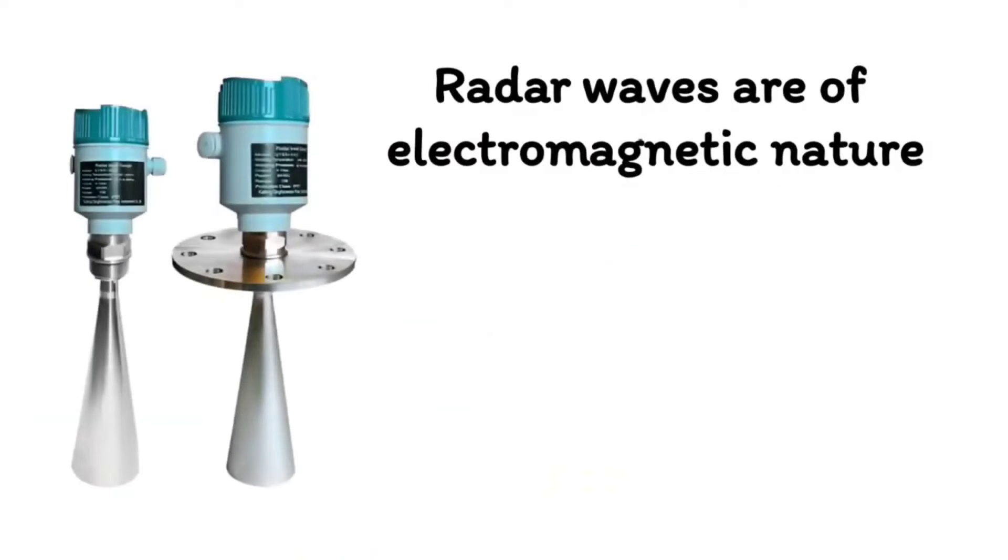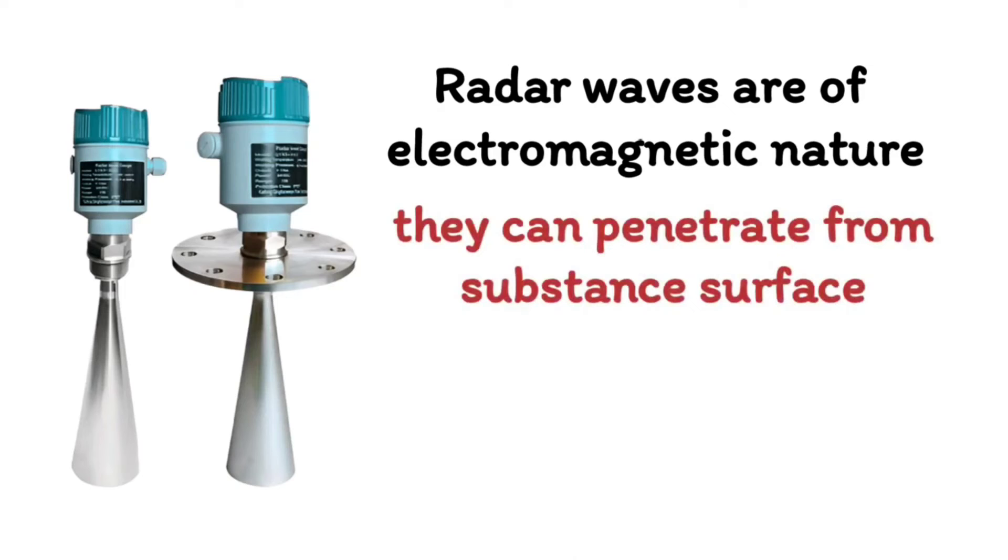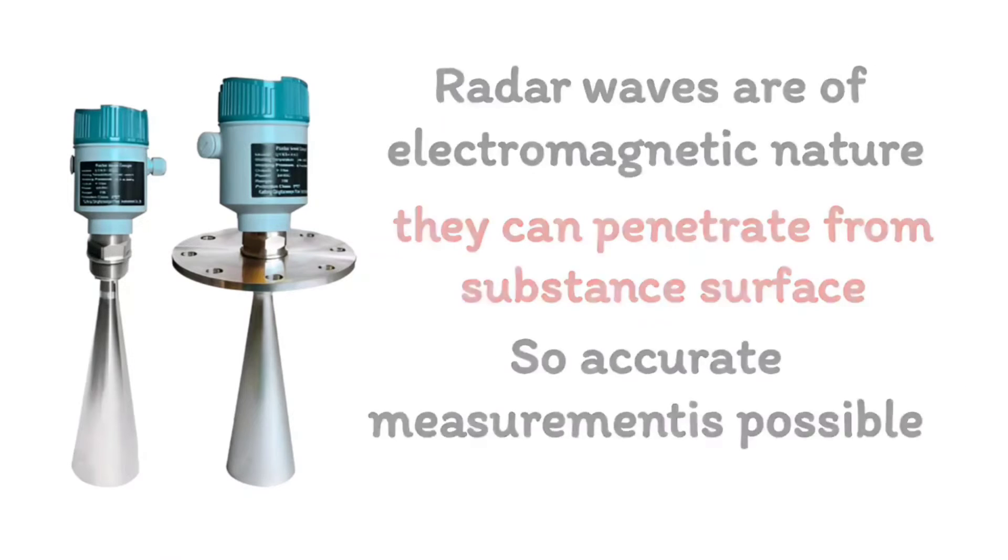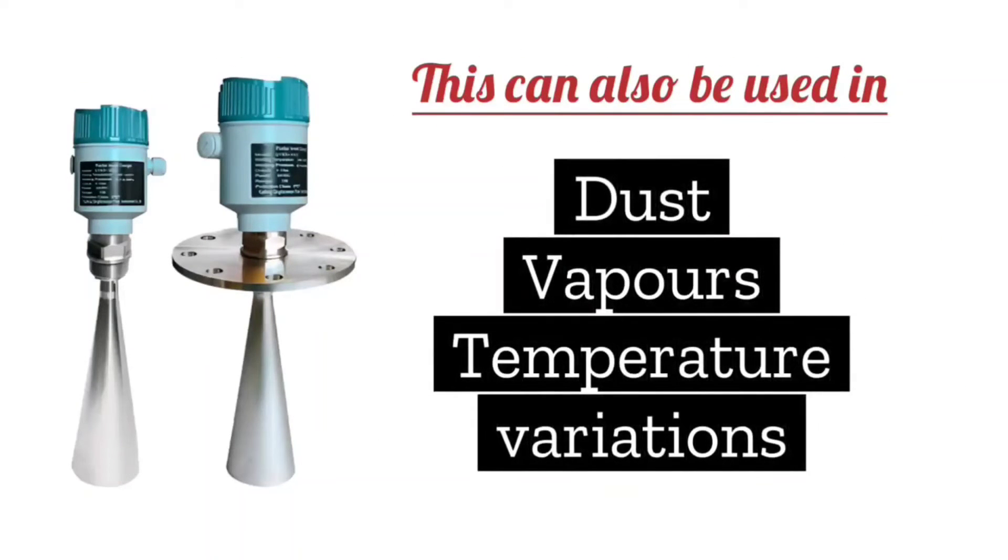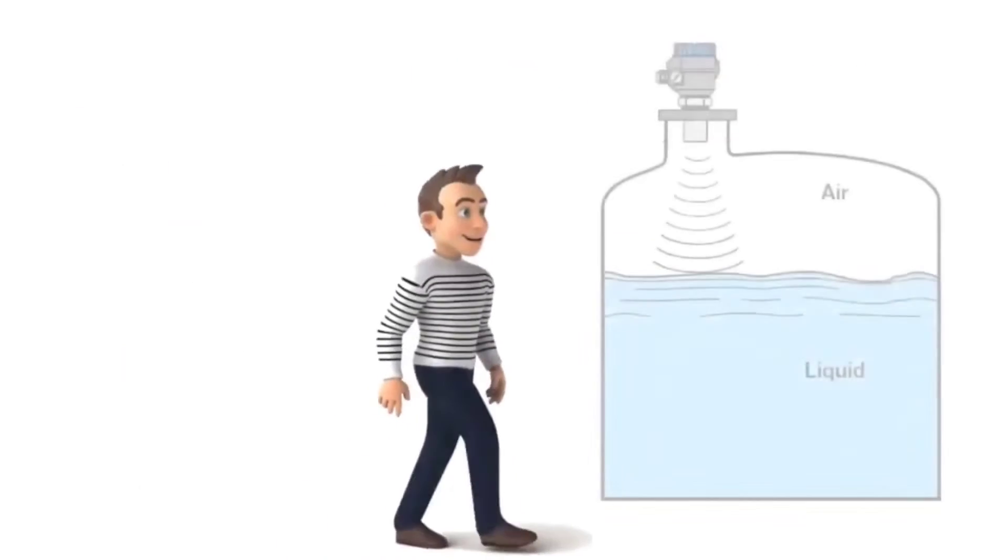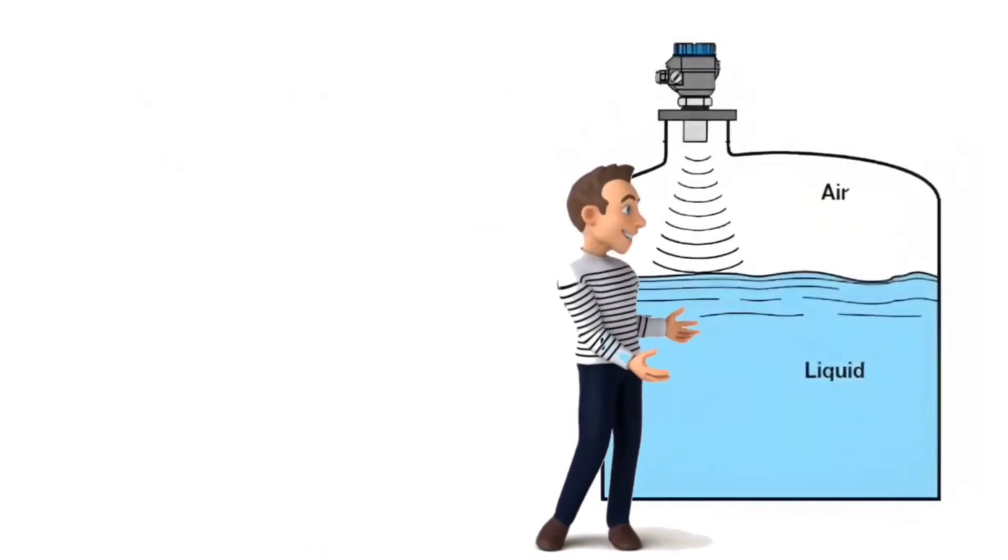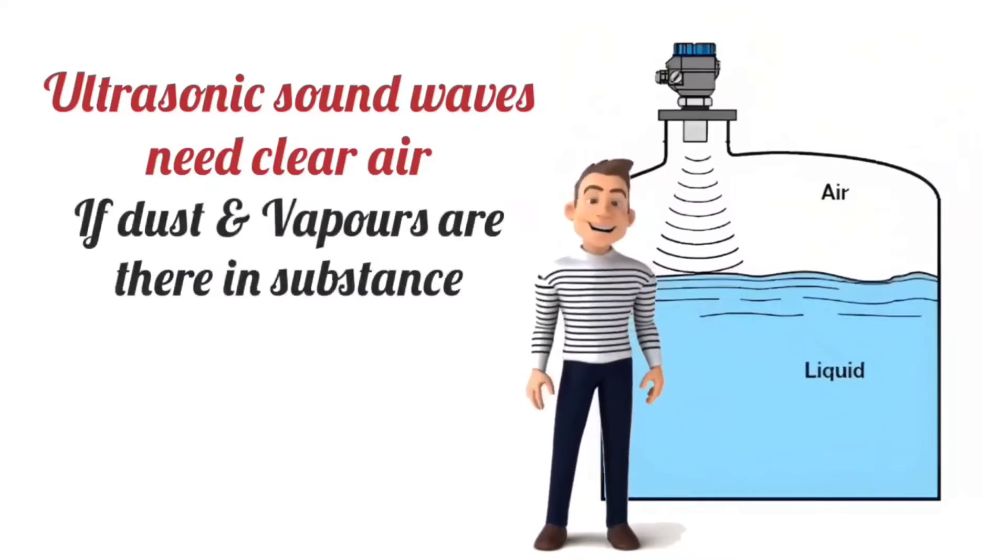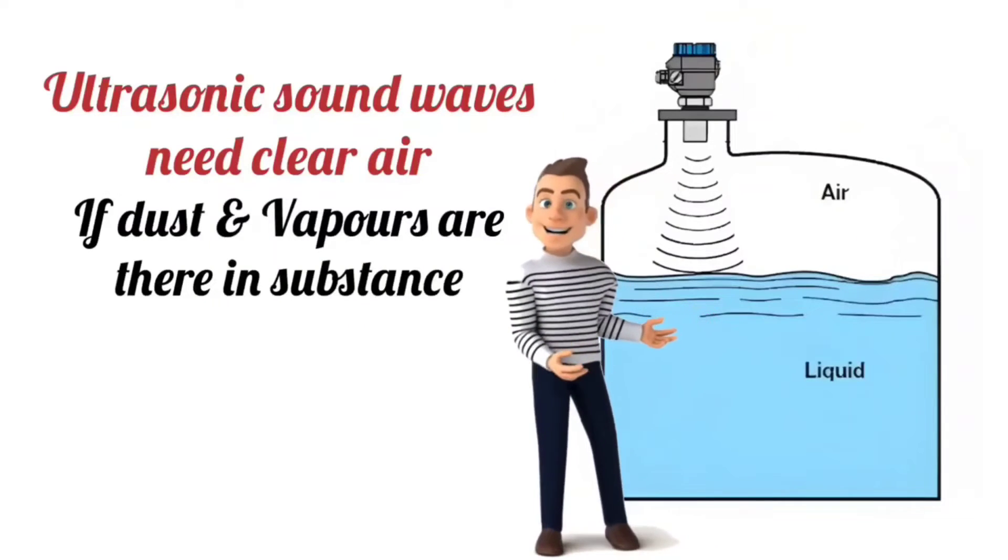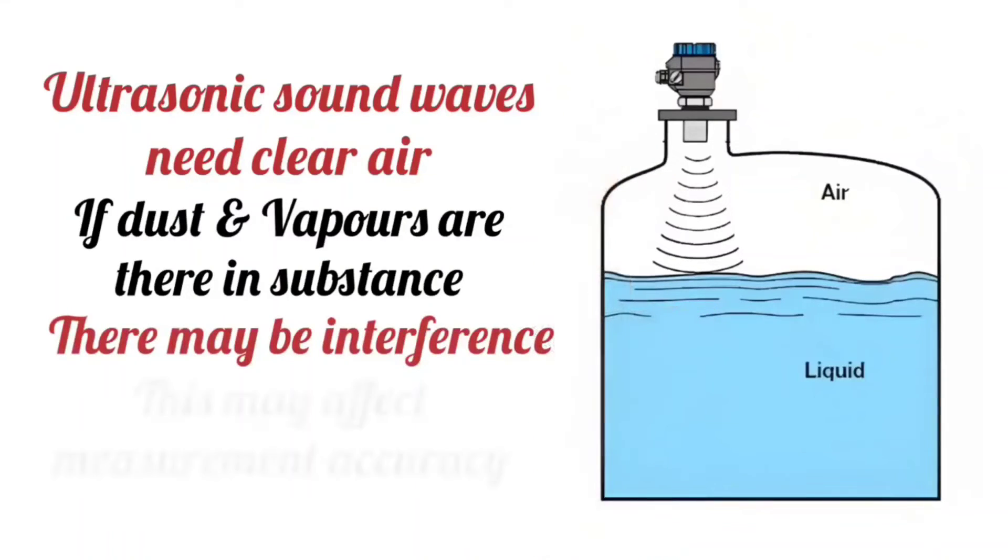Next is effectiveness. Radar waves are electromagnetic in nature, therefore it can also penetrate through the surface of the material. So accurate measurement is possible. It is also suitable for use in the dust, vapors, and temperature variations. Ultrasonic sound waves require clean air to reach the surface. If the substance contains dust or vapors, interference may occur, which may affect measurement accuracy.